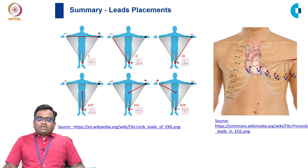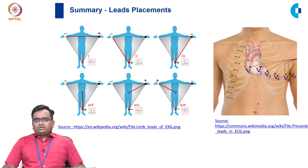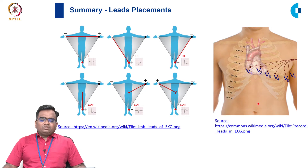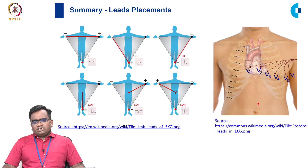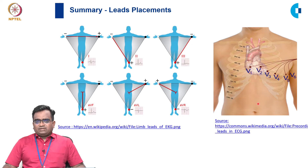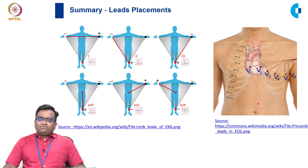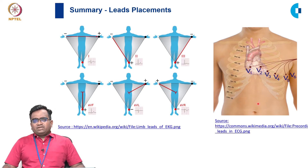In summary: L1 records the potential difference from left arm to right arm; L2 from right arm to left leg; L3 from left arm to left leg. Unipolar limb leads are AVR for right arm, AVL for left arm, and AVF for left foot. The precordial leads are V1 to V6. These form the 12-lead system in a standard ECG.